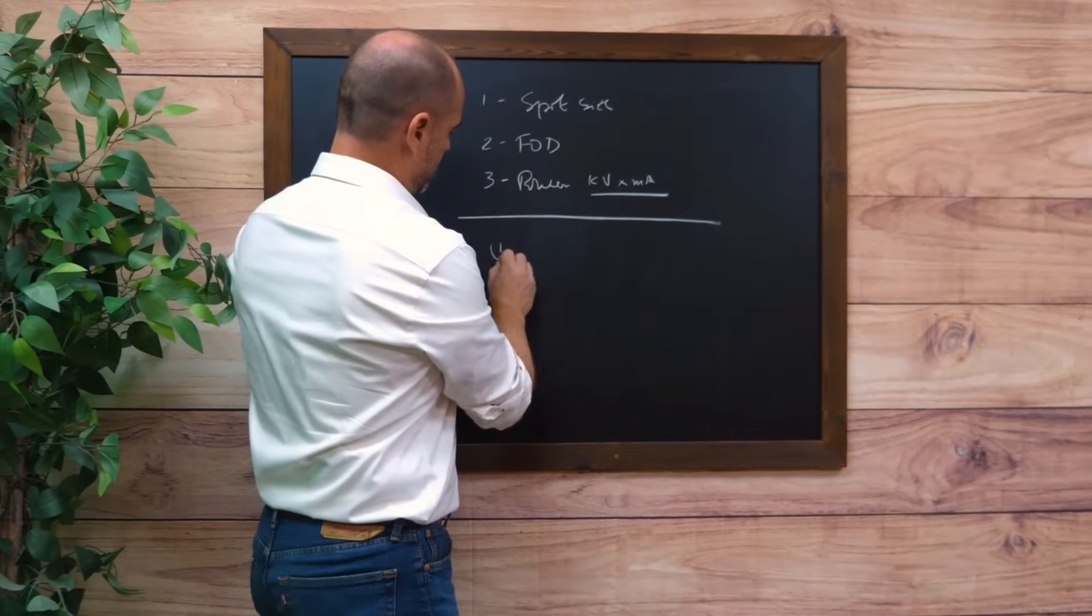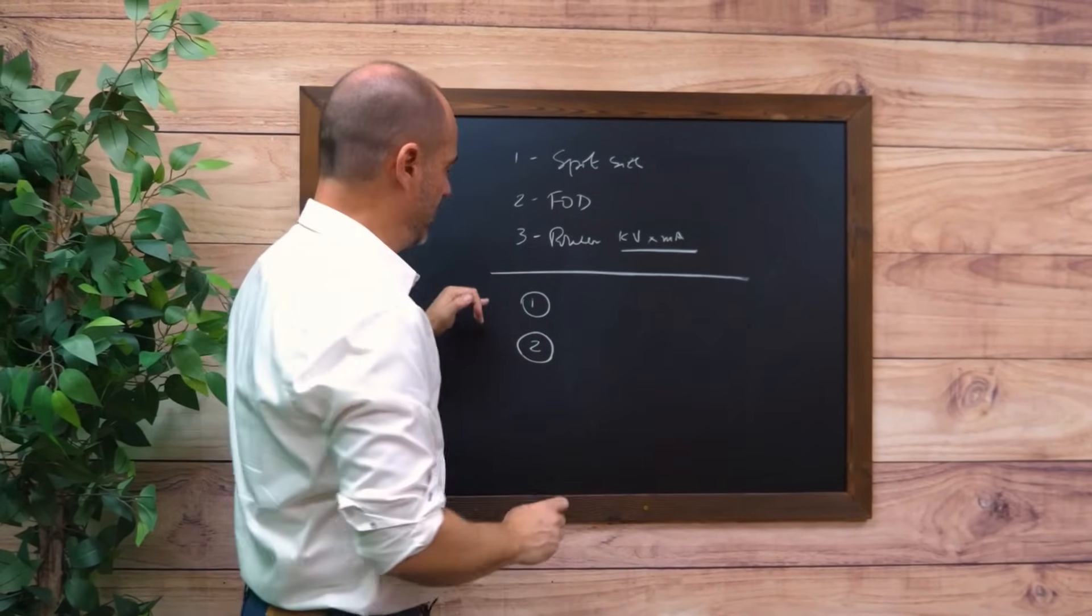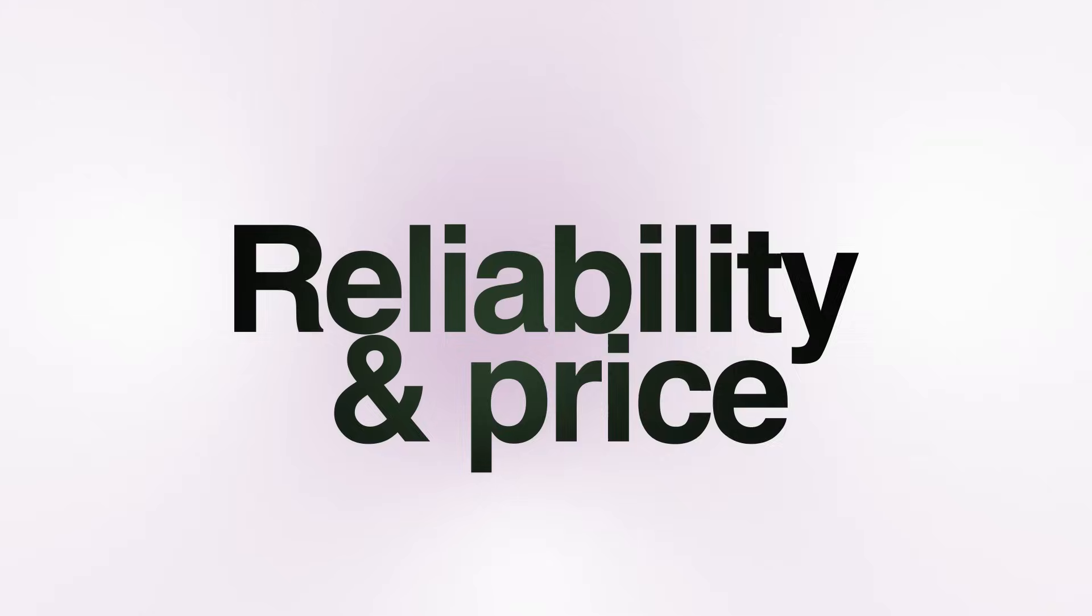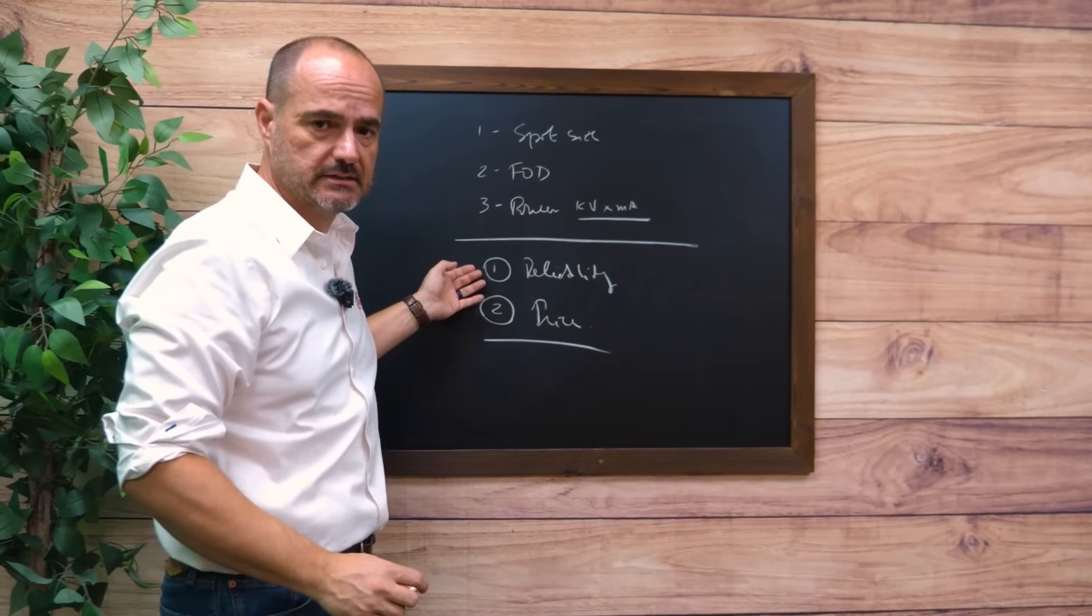Once you have that determined, the two critical parameters we use to define what source we'll use are reliability and price. That's something experience and time in the market have determined for us.